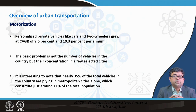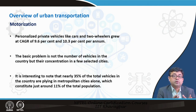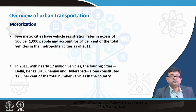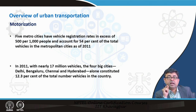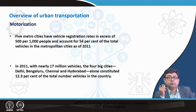It is interesting to note that nearly 35 percent of total vehicles in the country are plying in metropolitan cities alone, which constitute only around 11 percent of the total vehicle population. So one-third of all vehicles are in metropolitan areas, while non-metropolitan areas together have the remaining 67 percent. Five metro cities are looking at higher motorization rates, and what is happening is that one household now has more than one motorized vehicle — it is very common in urban and metropolitan areas for a household to have either two two-wheelers or one two-wheeler and one four-wheeler.